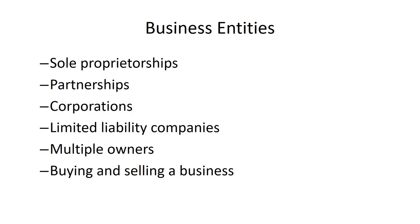The simplest and least expensive form is a sole proprietorship. The simplest form when there are multiple owners is a partnership. A corporation or a limited liability company will provide protection from personal liability, but will also be somewhat more expensive to organize.